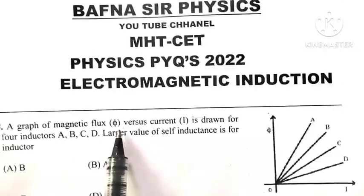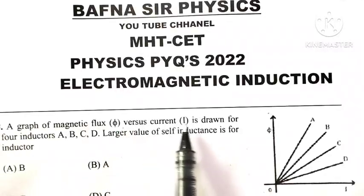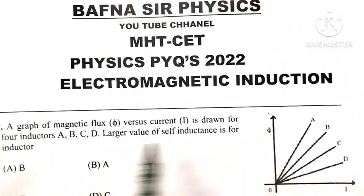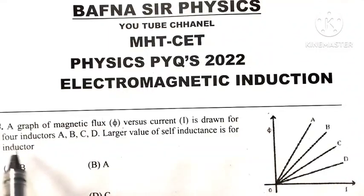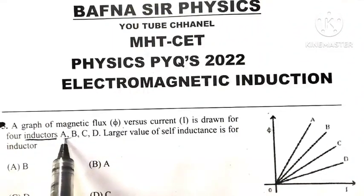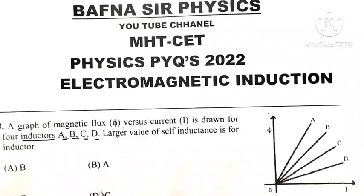A graph of magnetic flux phi versus current I is drawn for four inductors: A, B, C, and D.